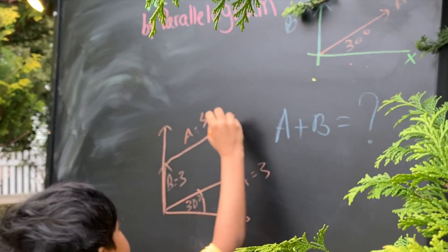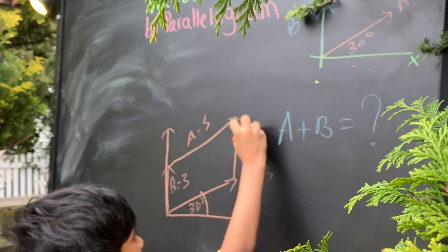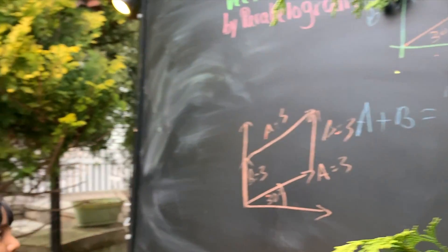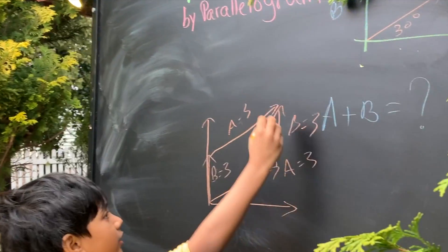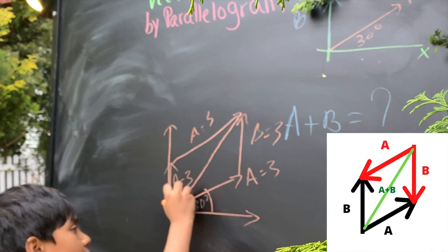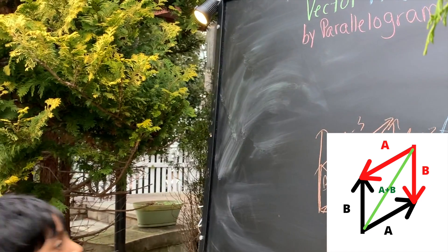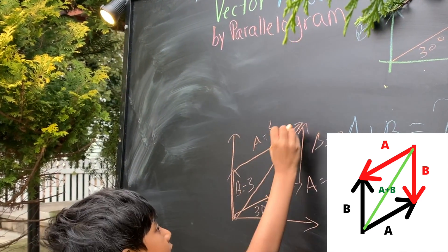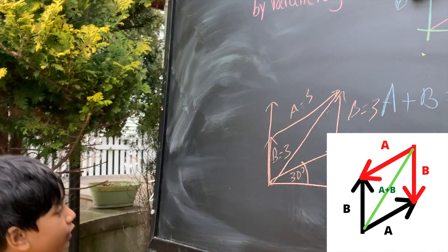And putting this here, this is b, we get a way to find the sum of a plus b. But we have to find the length of that first. Sorry, it should be along with this point and this point.